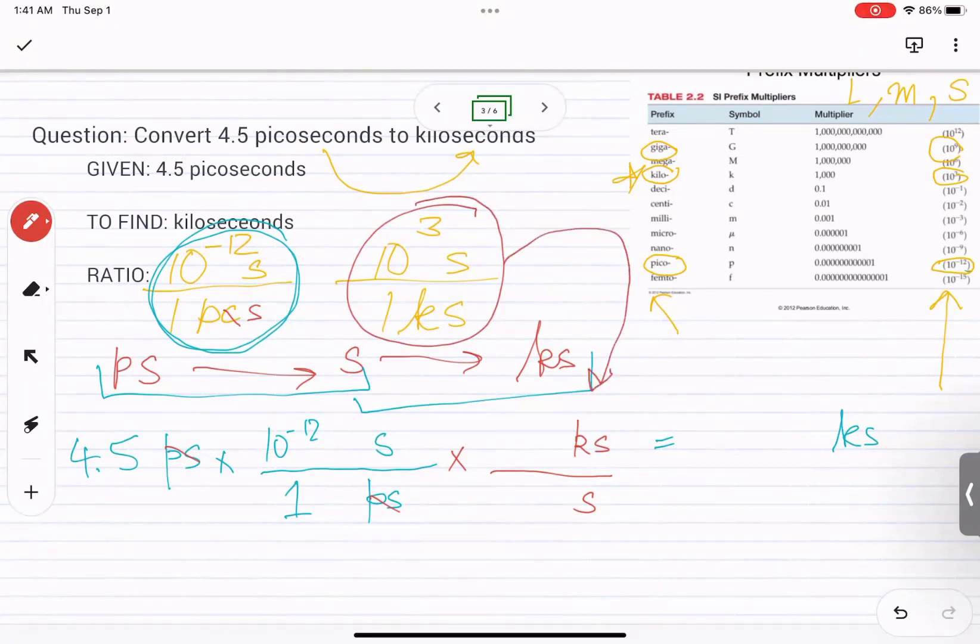The answer is no, because if we do that, the units won't cancel out. So we have to reverse it. We put 1 kilosecond on the top and 10 raised to 3 seconds on the bottom.